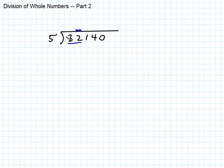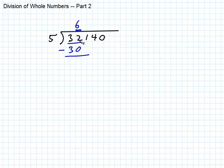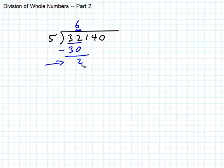How many times will 5 go into 32? Round it off — 32 is sort of like 30, and 5 times 6 is 30. So I put 6 up there, then go 6 times 5 is 30, and subtract to see how far off my guess was: 32 minus 30 gives a remainder of 2. Now the important step: compare this remainder to the divisor. Make sure it comes out smaller than the divisor. If it's not smaller, we have the wrong number up there.